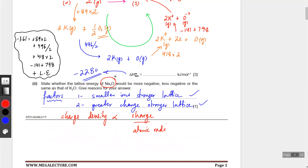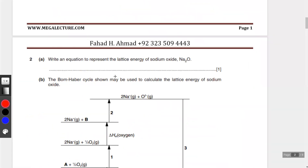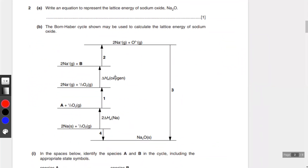The next part is writing the equation to represent the lattice energy of sodium oxide. For the lattice energy definition, an ionic lattice is formed from its constituent gaseous ions - so there are going to be two sodium ions plus an O²⁻ gaseous ion, and they get together to form the ionic bond that forms the ionic lattice.